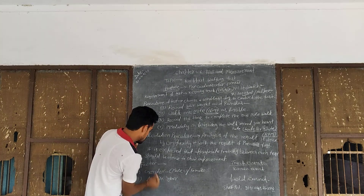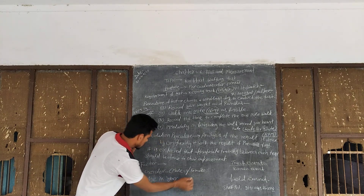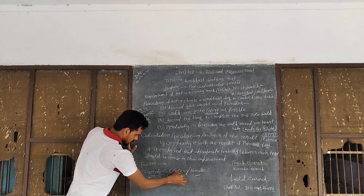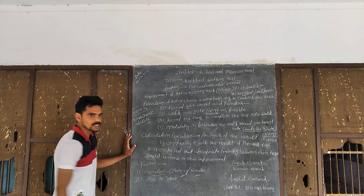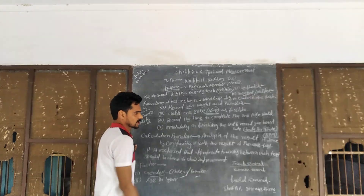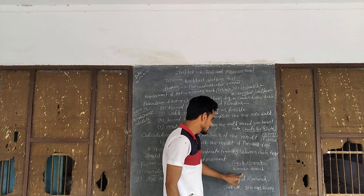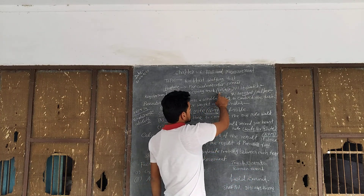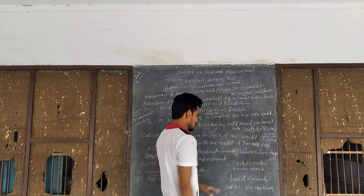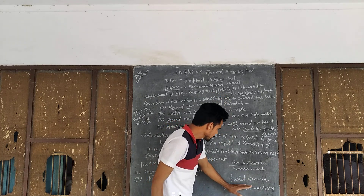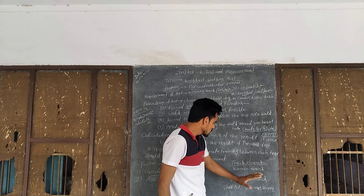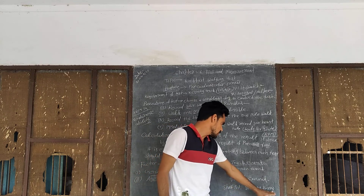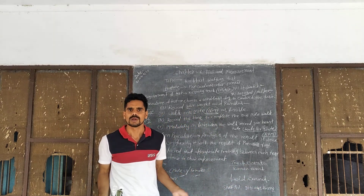Factors considered include: gender — male and female; age group; and the type of event — track events (running events) and field events. Running events include sprints and medium and long races.